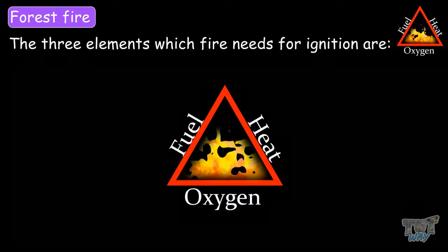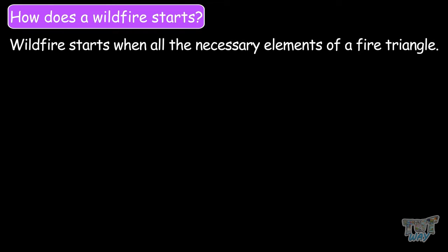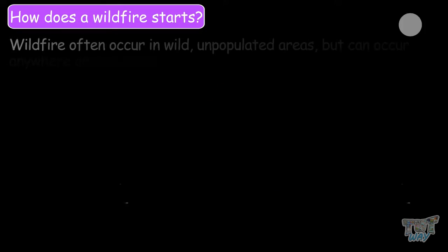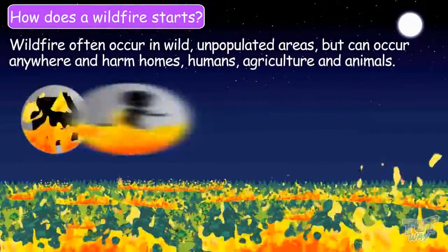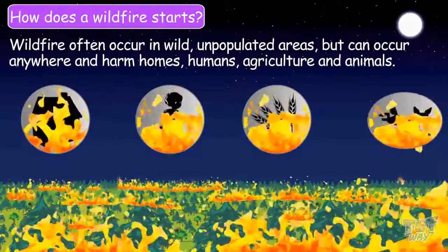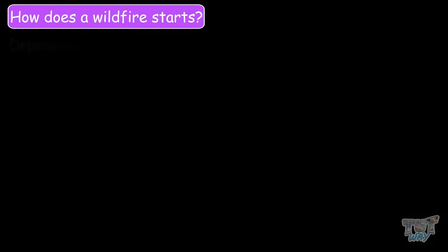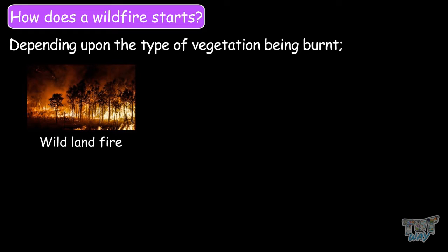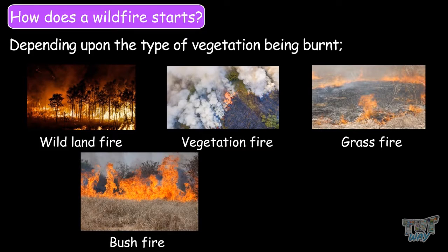Now we know the three elements of the fire triangle. Now, we will learn how wildfires start. A wildfire starts when all the necessary elements of the fire triangle are present. Wildfires will often occur in wild, unpopulated areas, but they can also occur anywhere — near farm homes, humans, agriculture, and animals. Wildfires often begin unnoticed and spread very quickly. Depending on the type of vegetation being burnt, the wildfire can also be known as wildland fire, vegetation fire, grass fire, bush fire, or hill fire.